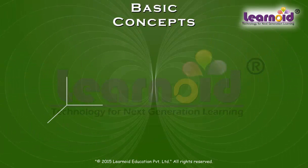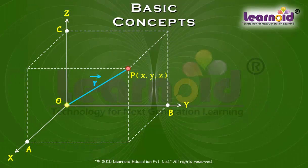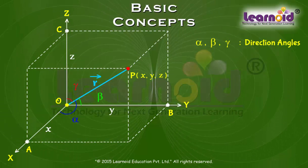Let us consider the position vector OP or R again. The vector R made angles alpha, beta and gamma with positive X, Y and Z axis respectively. Alpha, beta and gamma are called direction angles of point P or vector R.